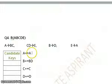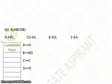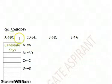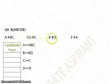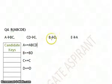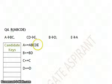For question 4, I start by finding the closure of A. A gives me B and C, so I include B and C in the closure set. From A, B, C, I can get D from B. So I include D. From C, D I can get E. So I include E. So I have all attributes A, B, C, D, E.